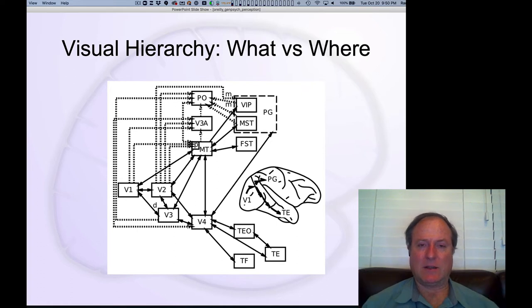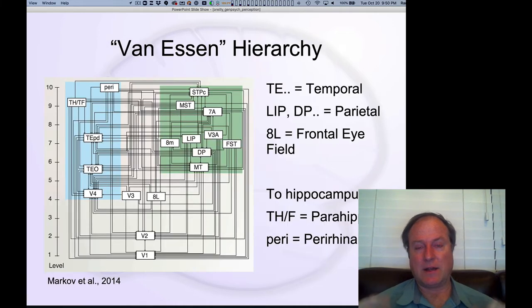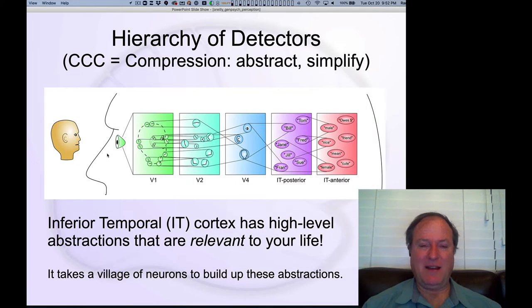These hierarchies and these pathways can actually be recovered by looking at the detailed connectivity of brain areas. This is the result of an automated technique that was applied to just detailed anatomical properties of the connections between these different areas, showing a division between that same kind of what pathway in blue here versus the dorsal where pathway or the how pathway. And the top of this hierarchy goes all the way up into the hippocampus, providing these kind of object representations and event representations that feed into the hippocampus.